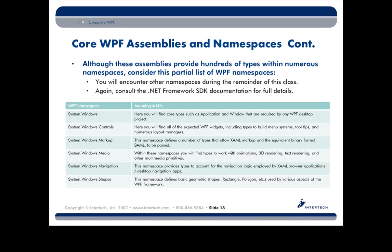Here's a subset of some of the namespaces you'll be bumping into. System.Windows is the root. Inside of there you'd find, for example, the Application and the Window class. There are a number of different namespaces that package up different controls, but this is the primary area — where you'll find all the controls for menu systems, buttons, list boxes, and so on.